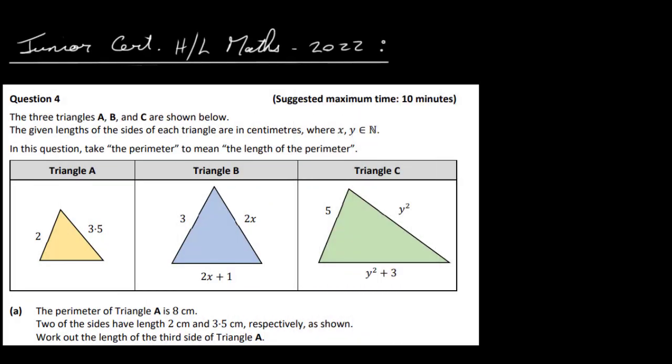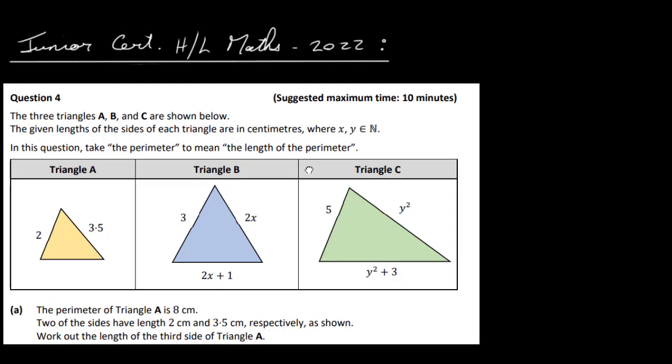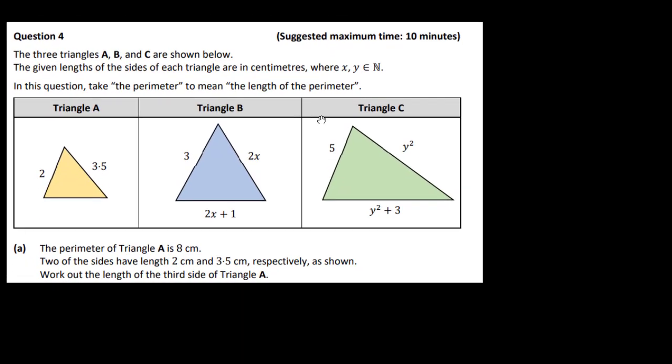Let's have a look at the Junior Cert Higher Level Maths paper for 2022, question 4. In the first part, part A, we have three triangles A, B, and C. The given lengths of the sides of each triangle are in centimeters, where x and y are natural numbers.